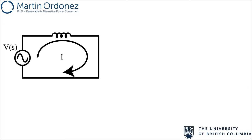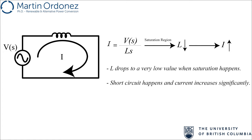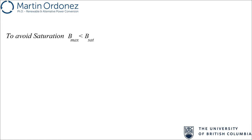To understand the effect of core saturation on a circuit, consider a simple case where an inductor is connected to a voltage source. The current equals V divided by the impedance of the inductor. When the core gets saturated, the inductor value drops to a small value, causing the current to significantly increase. So the symptom of core saturation is a large current surge.